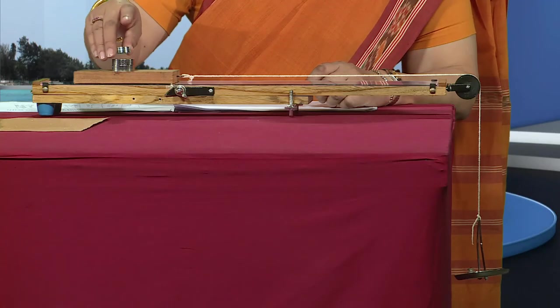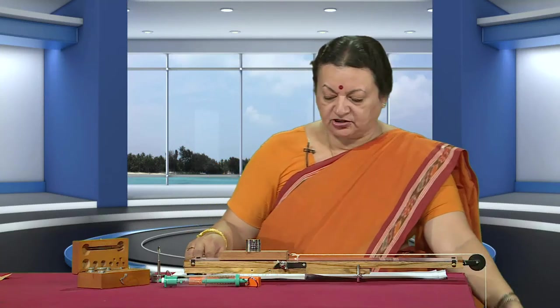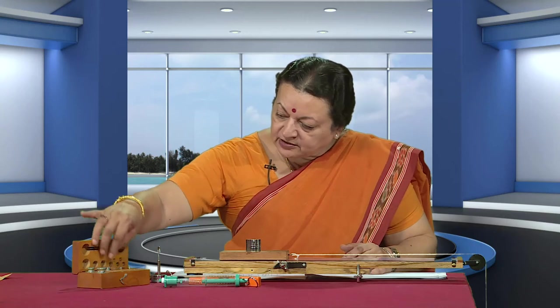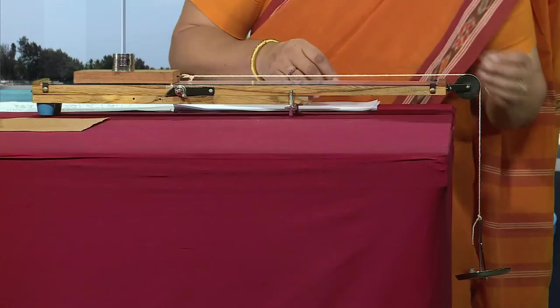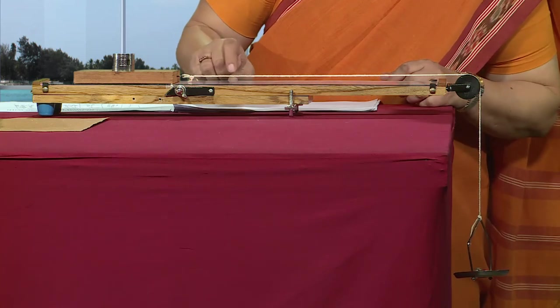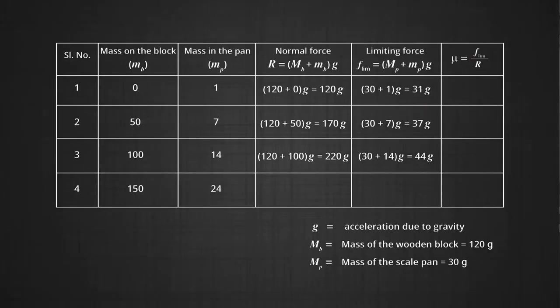In addition, one more 50 grams is added on top. We check what weight is needed in the pan and increase it. The gentle tapping indicates that 24 grams here is sufficient to just move the block. So the next reading is 150 grams on the block and 24 grams in the pan. The normal force is 270 and the limiting friction value is 54. This is our set of readings.